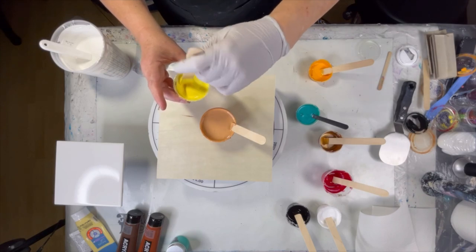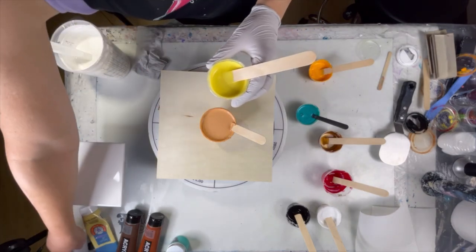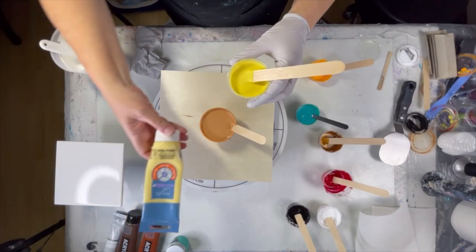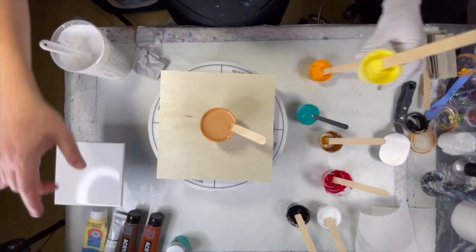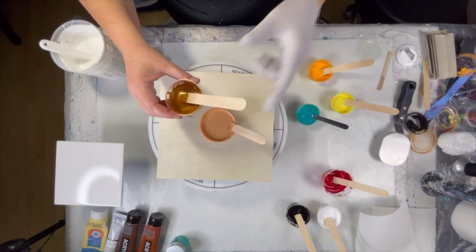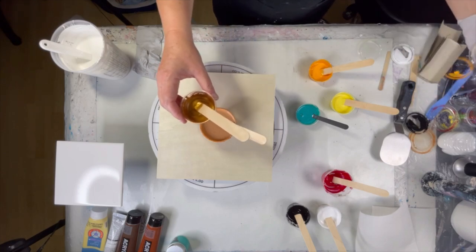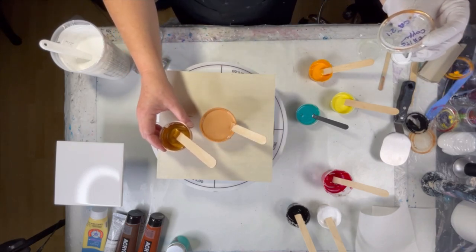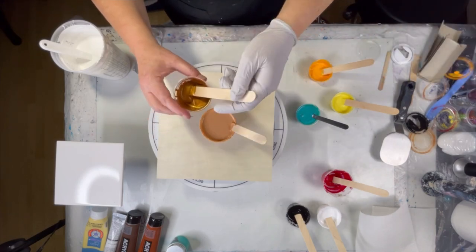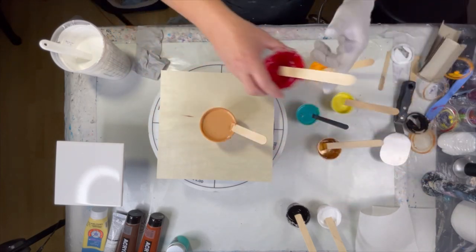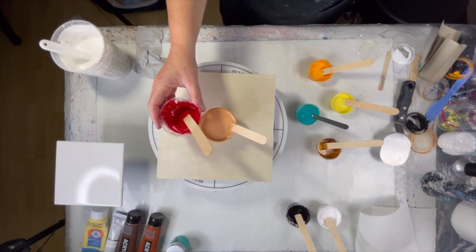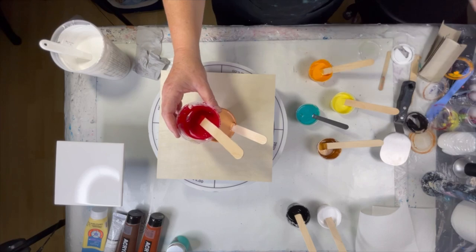My yellow is a mix of a tiny blob of Golden's benzimidazolone yellow light and Artist Loft naples yellow. Next up is Folk Art treasure gold in copper that I had mixed up for a previous pour as a cell activator and it failed, so I'm going to use it as a color in this. And my kind of cherry pinky red is a combination of Liquitex cadmium red deep hue and primary red.